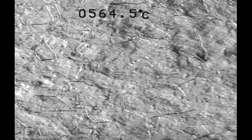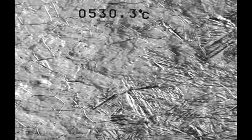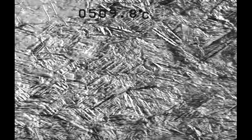The bainite transformation is also displacive, so it should not be surprising that similar displacements are observed when a flat surface of austenite is allowed to transform into bainite.